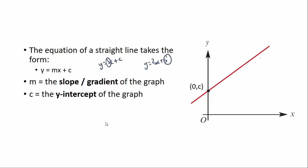You might also see equations in the format y equals a plus bx — this is exactly the same. In this case, b is the gradient and a is the y-intercept. Using the letters m and c again, that's just y equals c plus mx. You can see it's the same thing; they just like to be a bit confusing at times.